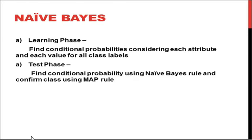There are two phases for the Naive Bayes algorithm. The first is the learning phase, where we find the conditional probabilities considering each attribute and each value for all class labels. The second is the testing phase, where we find the conditional probabilities using the Naive Bayes rule and determine the class label using the MAP decision rule, which is the maximum a posteriori probability rule.